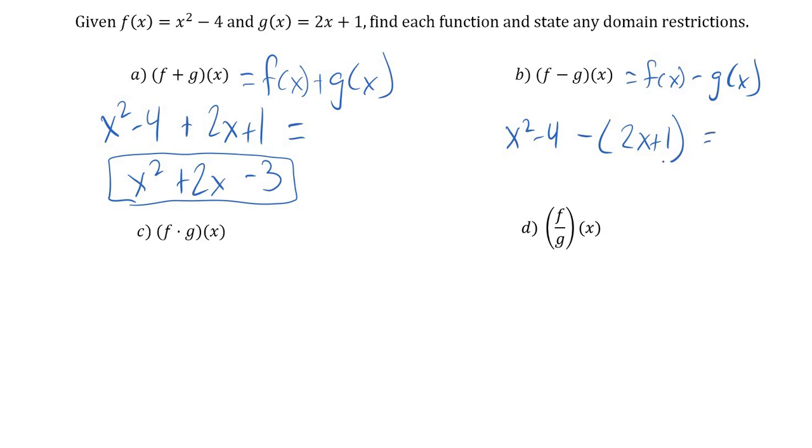So we've got x squared still. Now we'd have minus 2x. And negative 4 minus 1, so that would be minus 5. Again, I just distributed that negative through and combined like terms.